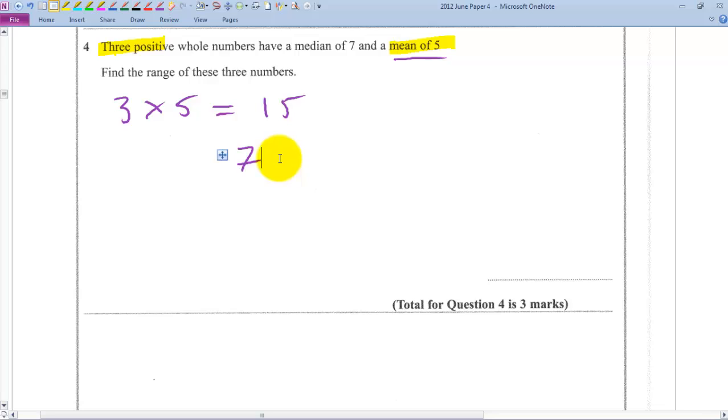Well, actually, if you have a number greater than 7, the only number bigger than 7, the next number up is 8. 8 plus 7 is 15, not leaving anything for the lower number. So actually, the greater number must also be 7. And that would give you a median of 7. And that leaves you 1 as the only possible number to be lower than 7.